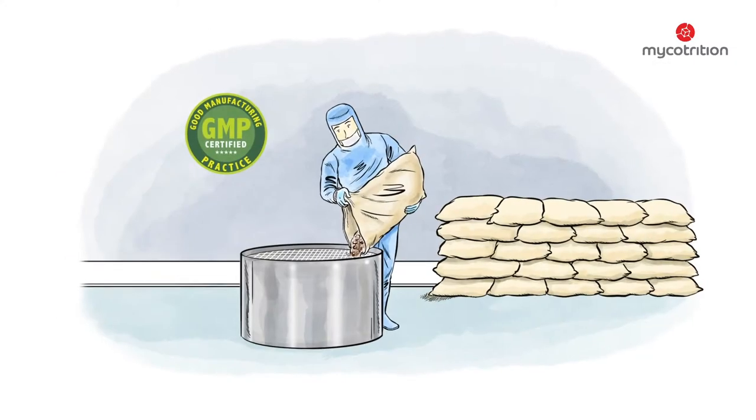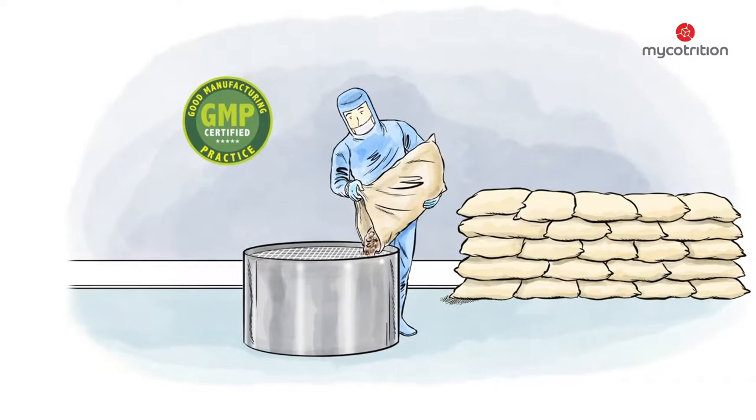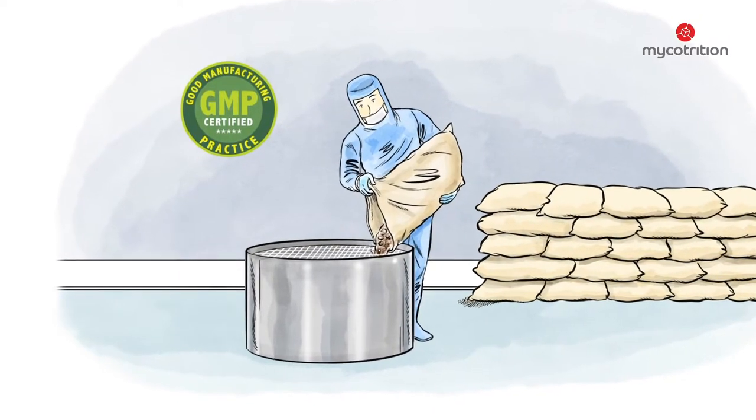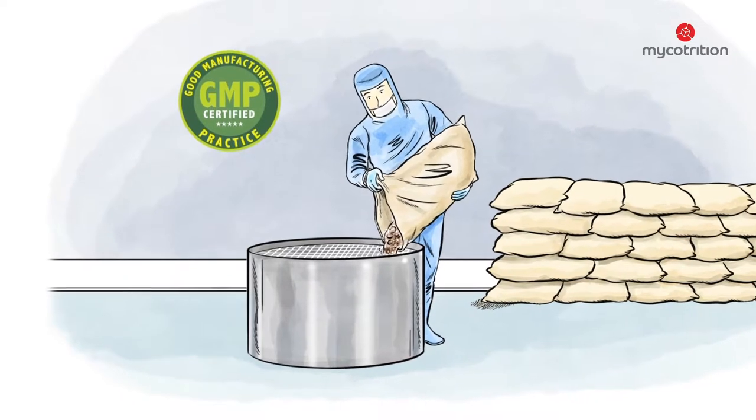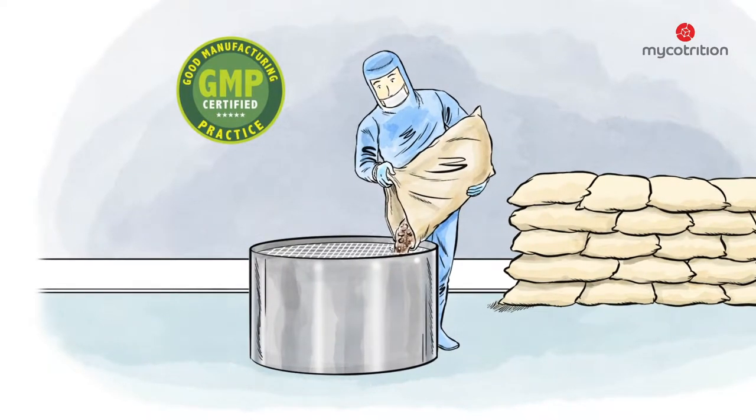The first step in the extraction process is to fill the extraction tanks with mushroom pulp. This is done by a filler tube from above. 250 to 500 kg of milled mushrooms are needed for one single extraction process.